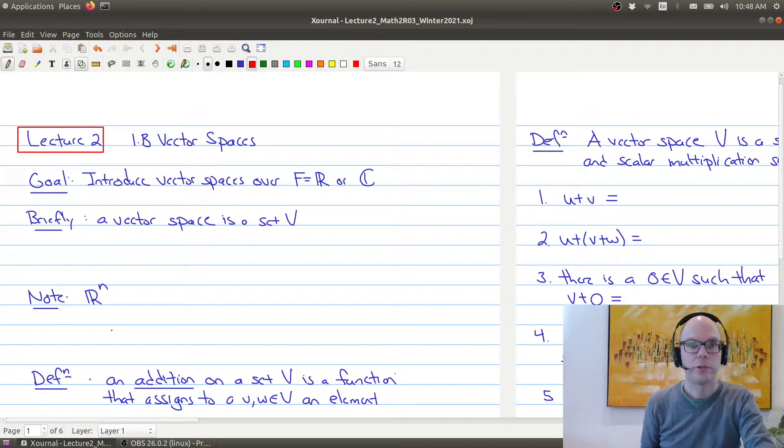Hello and welcome to lecture 2 of Math 2R03. In today's lecture we're going to look at section 1B of the textbook, which is on vector spaces. If you remember back from Math 1B03 or 2LA3, you would have been introduced to a vector space. What we're going to do is review the definition of vector space, give some examples we'll be looking at a lot in this course, and then look at some of the basic properties of vector spaces.